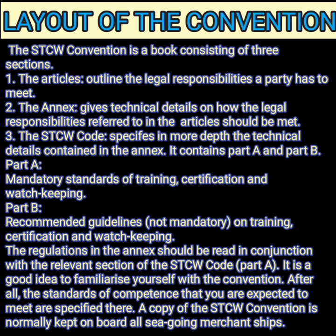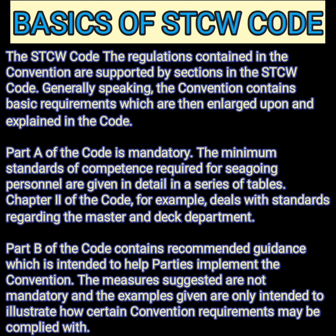Now let's come to the STCW code which specifies in more depth the technical details contained in the annex. The code has two parts: Part A and Part B. Part A is mandatory standards of training, certification and watchkeeping. Part B, as usual in most conventions, is the recommended guidelines which are not mandatory on training, certification and watchkeeping. The regulations in the annex are usually read together with the STCW code Part A, because the code specifically covers what is expected from you — what standard of competence you are expected to meet and what certificates you are supposed to carry on board a ship. Basically, the STCW convention gives you the regulations you are supposed to comply with, and the code provides additional guidelines on how you can comply with these regulations.